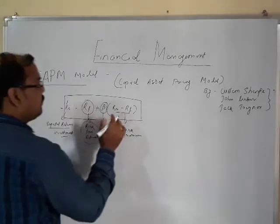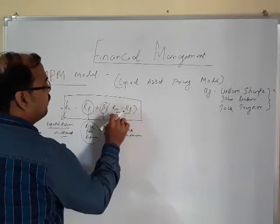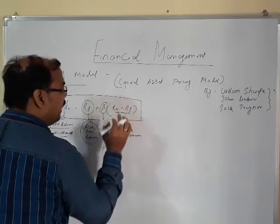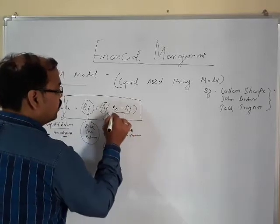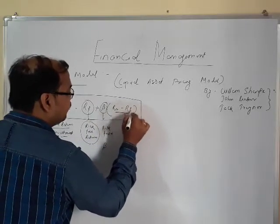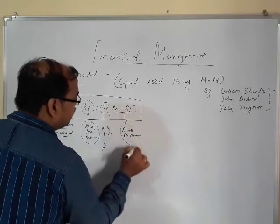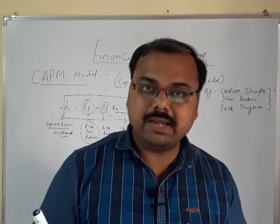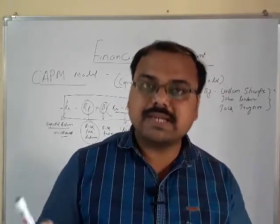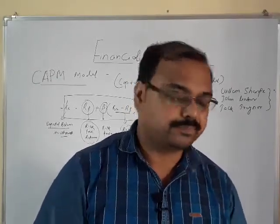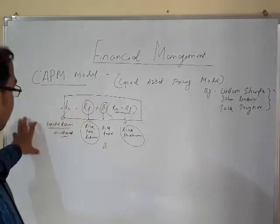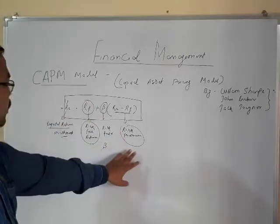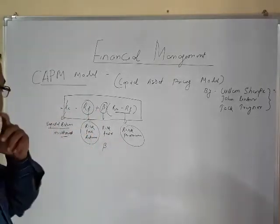The component Rm minus Rf: Rm is the return from the market, and Rf is the risk-free return. So return from the market minus risk-free return gives us the risk premium. As explained in the last class, the risk premium is the extra return you expect for taking on additional risk. The entire model combines risk-free return plus risk premium, scaled by the beta factor.